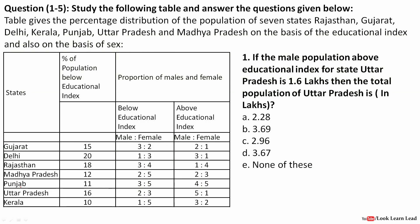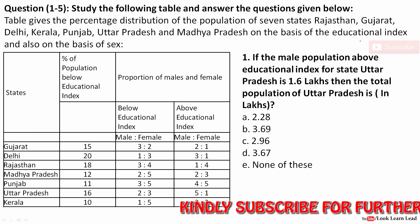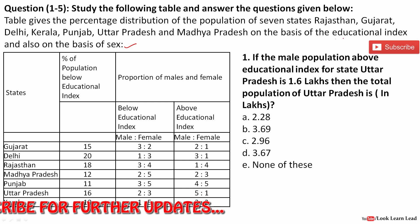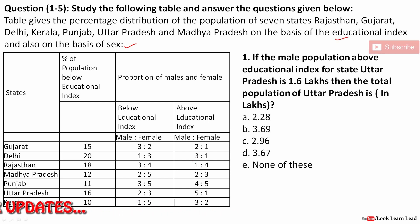In this question we have the population distribution of seven states, given on the basis of educational index and also on the basis of gender. The first column shows the percentage of population below educational index — all values are percentages. The second part shows the proportion of males and females, both below and above the educational index.